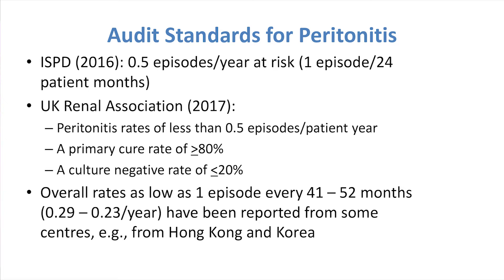Having said that, that is the audit standard — actually in many countries, as we heard from previous talks this morning, rates are much lower than that. And that includes countries which have a PD-first policy, so they're putting on patients who may not have started PD in other countries. They're often very hot, humid countries like Pakistan. The infection rates coming through the PDOP study, which looks at six different countries — UK, US, Japan, Thailand, Australia, Canada — show that the country with the highest infection rate, I regret to say, is the UK. Thailand has a very much lower infection rate than we do. So yes, you can get low rates of peritonitis in low-resource countries with hot, humid weather.